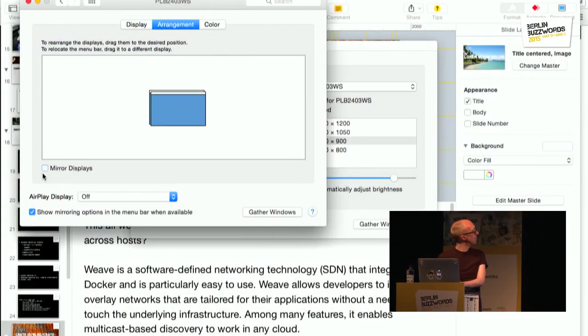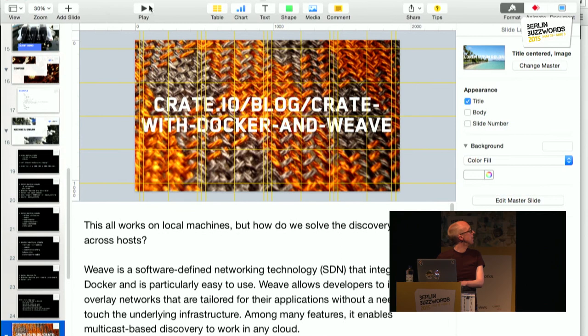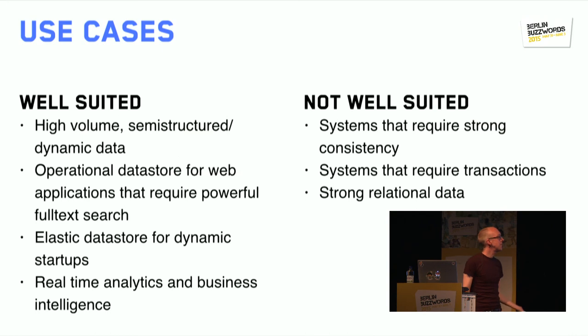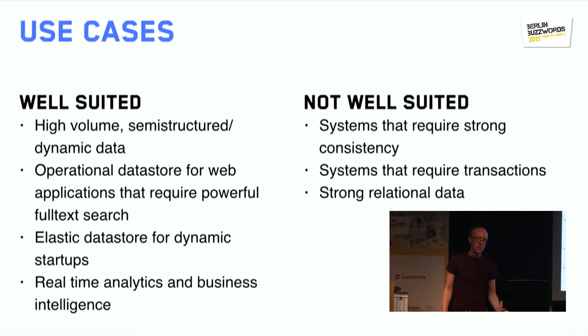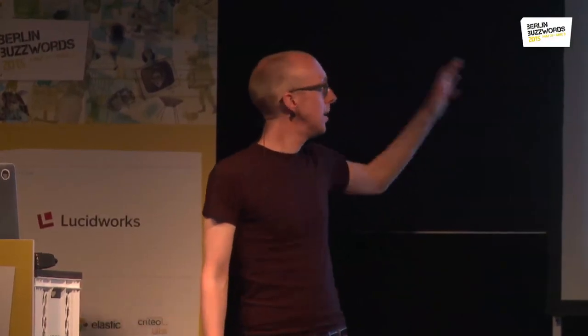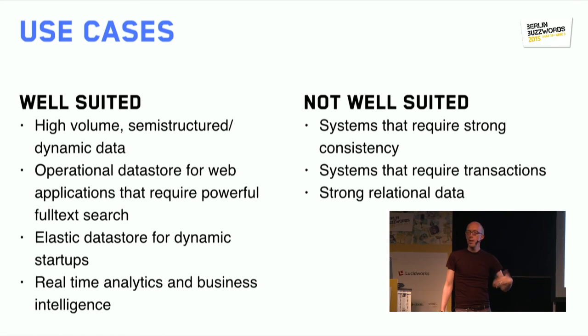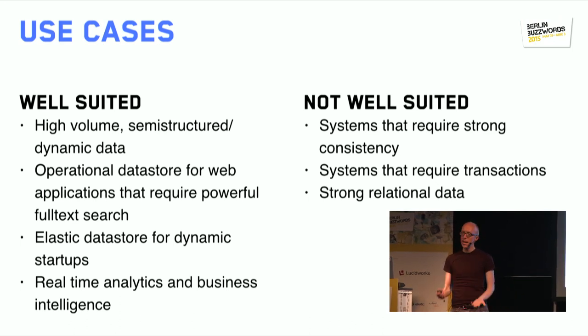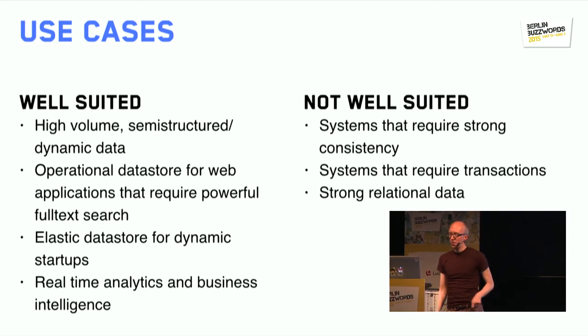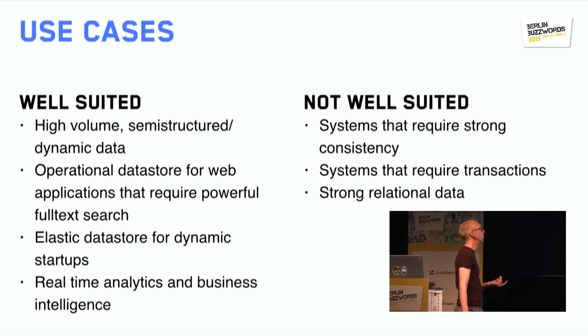To wrap up with use cases — let's start with the negatives. Systems that require strong consistency won't work well here because we have eventual consistency. If you 100% need a record to be available the very second it's been written — for example, financial or banking applications — then no. The same applies to transactions. Crate will keep going when queries fail, which may mean subsequent queries are not accurate. And currently we don't support proper joins, though they're coming very soon.